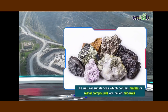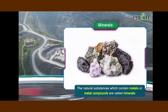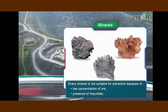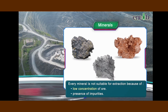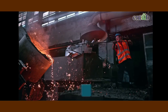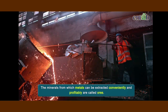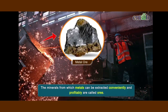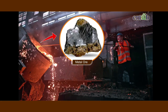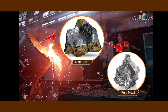The natural substances which contain metals or metal compounds are called minerals. However, every mineral is not suitable for the extraction of that metal, because of the low concentration of ore or it may contain impurities. The minerals from which metals can be extracted conveniently and profitably are called ores. But the ore may contain the metal in a combined and impure form, so the metal has to be obtained from the ore in its pure form.